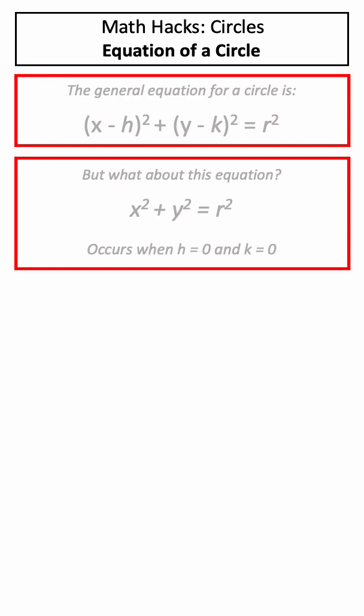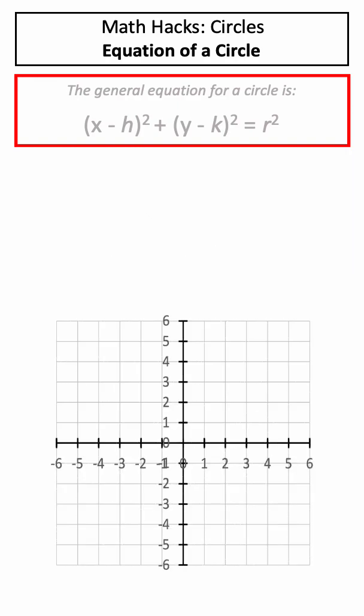Sometimes you may see the equation written like this, however this is the same equation, but h and k are equal to 0. While x and y are variables that will change, h, k, and r are constant values in our equation.